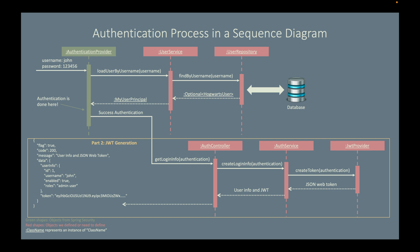Let's work on Part 2: JWT generation. This process is very straightforward once Part 1, the HTTP basic authentication, is successful. The auth controller, service, and JWT provider will work together to generate and return user info and the JSON web token.